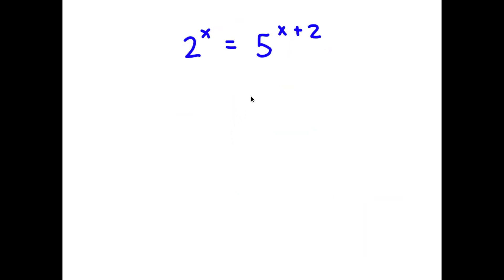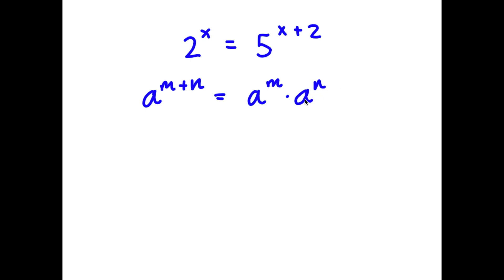In this problem, I have 2 to the power of x is equal to 5 to the power of x plus 2. So to start, if I have something in the form a to the power of m plus n, this is equal to a to the power of m times a to the power of n. So 5 to the power of x plus 2, I can rewrite this as 5 to the power of x times 5 to the power of 2.